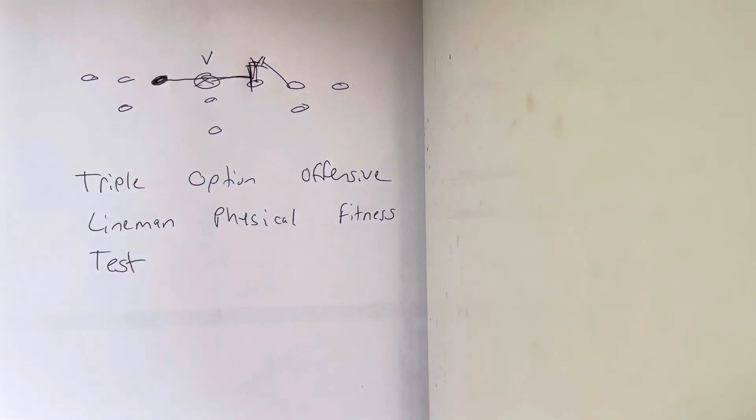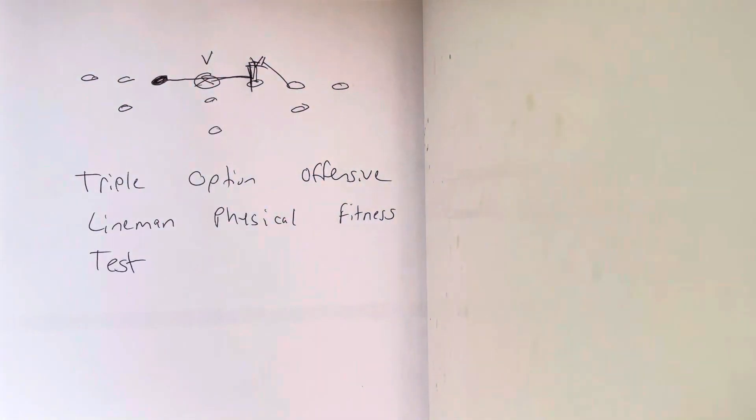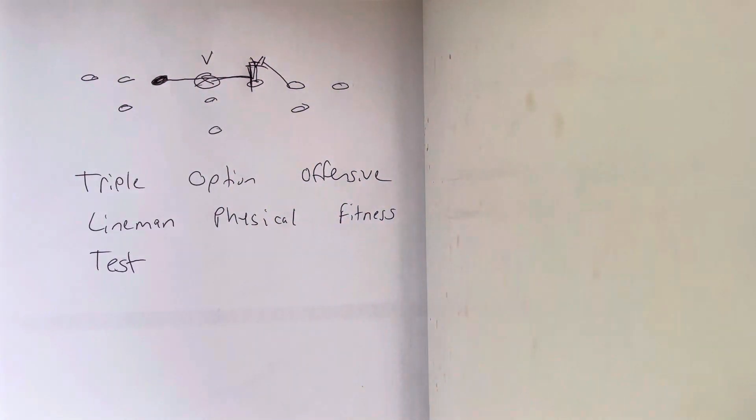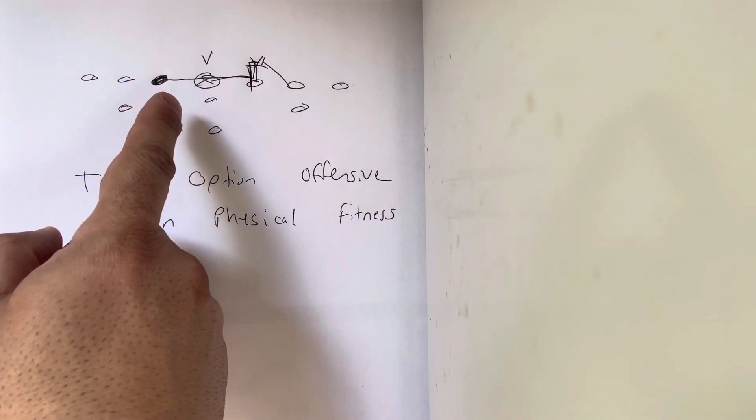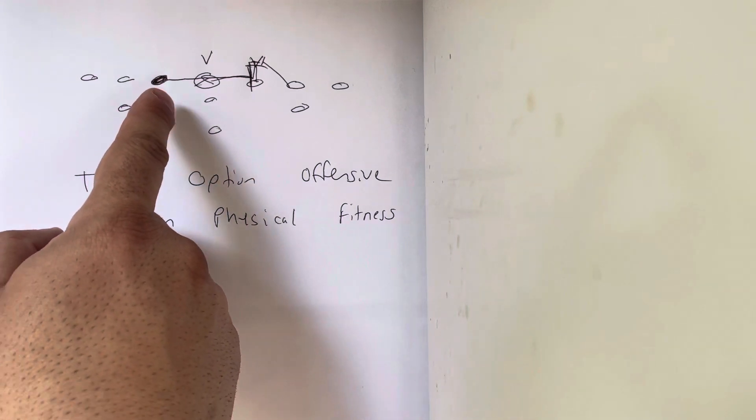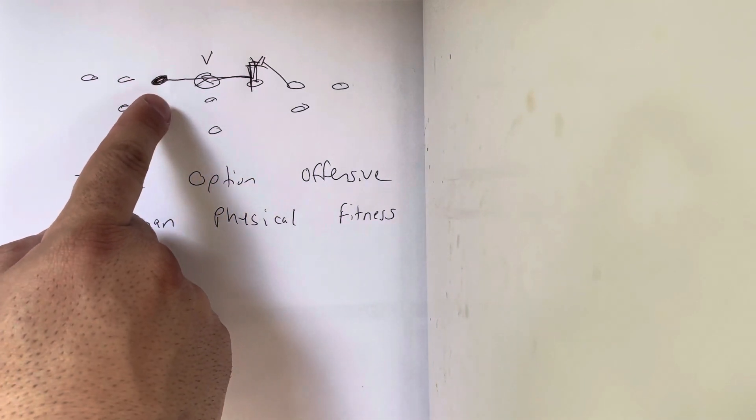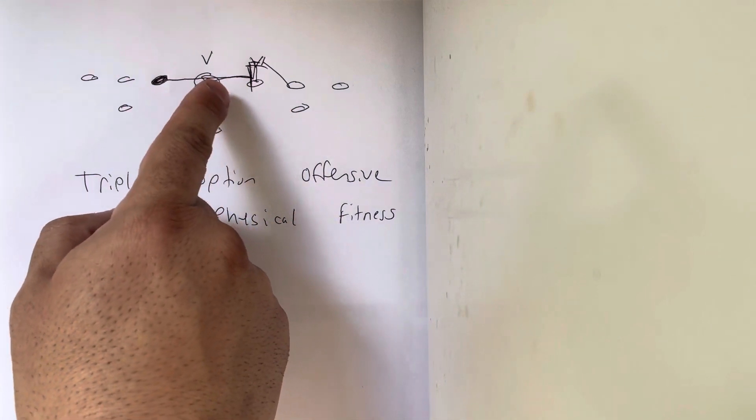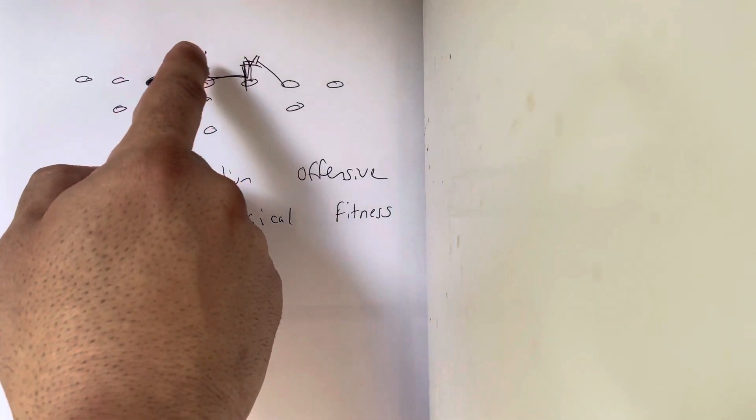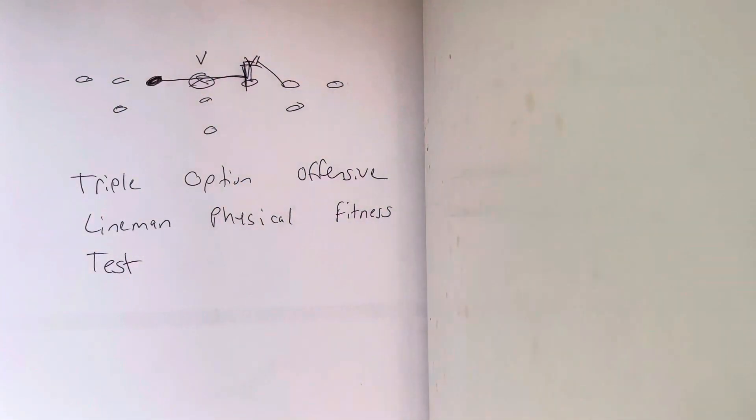If there's a zero technique there and the zero technique runs up the field, it's the job of a guard with a three to three and a half foot split to line up as deep as he can off the ball, open and run, and get through the center before the zero technique runs through the gap. That's the test.